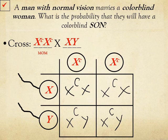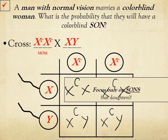Males get their X chromosomes from their mother, whereas girls get one X from their father and one X from their mother. We're only looking at the sons here — you might be tempted to say 50%, but we're only asking about the sons. So we'll focus only on the sons, and 2 of 2 means 100% — both sons, 100% of the sons, would have colorblindness.